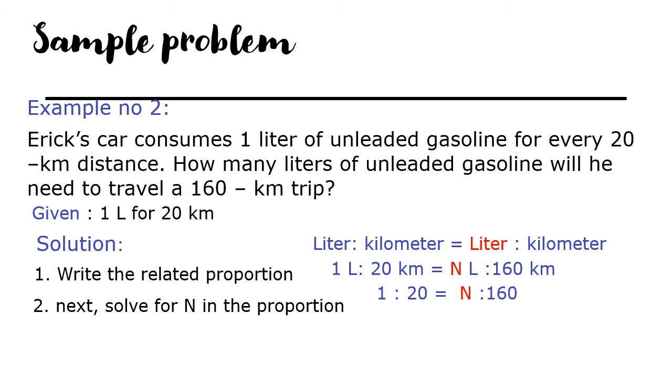Next, solve for N in the proportion. That becomes 20N equal to 1 times 160. Then, after finding the product, we will divide it by 20. So, 160 divided by 20 equals 8. The value of N is 8. There are 8 liters for 160 kilometers.